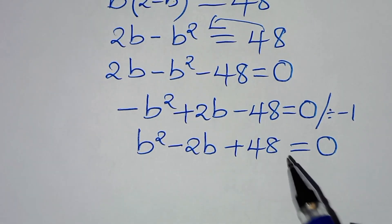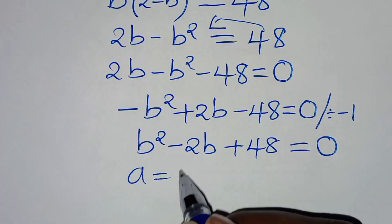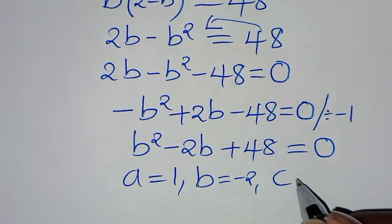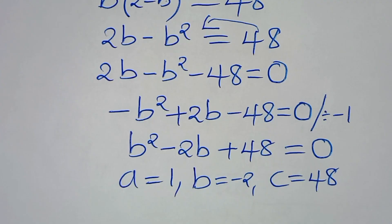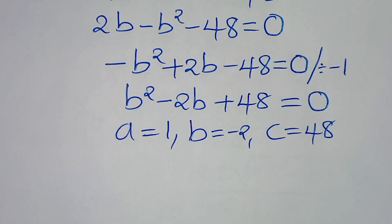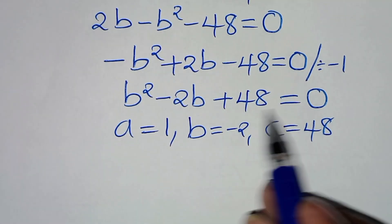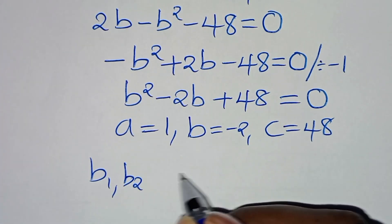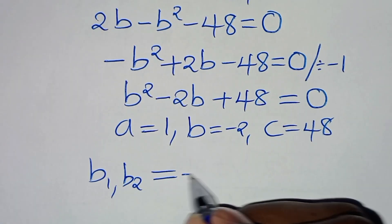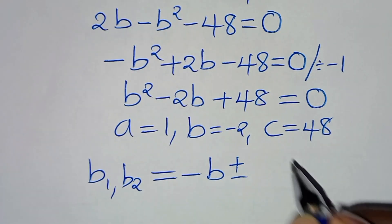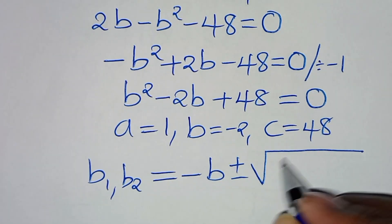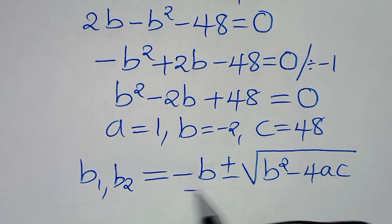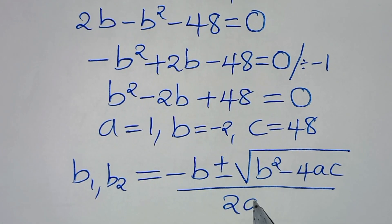This is a quadratic equation with a equal to 1, b equal to minus 2, and c equal to 48. We can solve for b1 and b2 by applying the quadratic formula: minus b, plus or minus the square root of b squared minus 4ac, all divided by 2 times a.